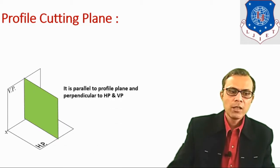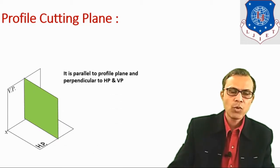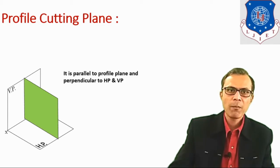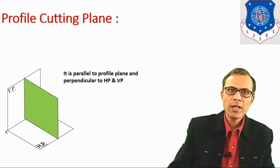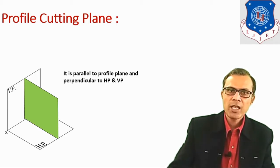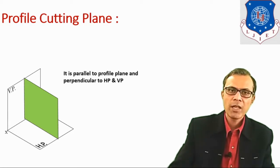The next type of cutting plane is the profile cutting plane. Here the position of the cutting plane is parallel to the profile plane and it is perpendicular to both HP and BP. When we cut any object by this type of cutting plane, the true shape of the section will appear in the side view.